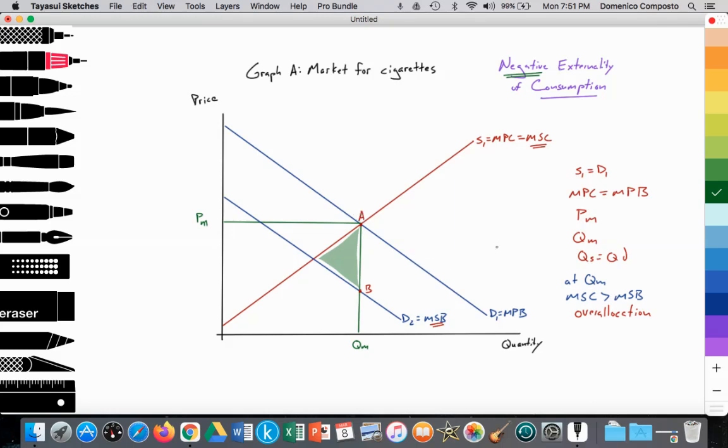So where is the social optimum? Social optimum is achieved at point C, where MSB equals MSC. Okay? That provides the optimal price at P-opt, and the optimal quantity, social optimum level of output at Q-opt. So we have Q-opt and P-opt. And there we have illustrated a negative externality of consumption.